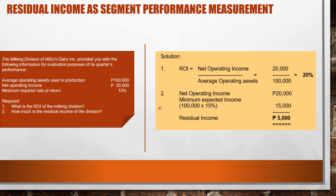For requirement number two, how much is the residual income? We substitute the figures into the residual income formula. Residual income is the difference between net operating income of $20,000 deducted by the minimum expected income. To get the minimum expected income, we take average operating assets of $100,000 multiplied by the minimum required rate of return of 15%, giving $15,000. So $20,000 less $15,000 gives us $5,000 in residual income. This is straightforward and easy.